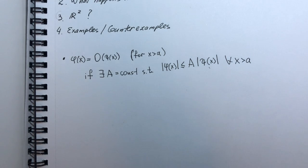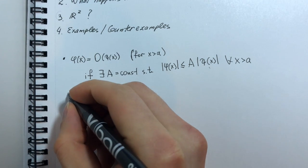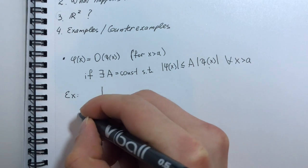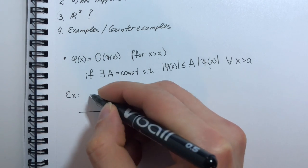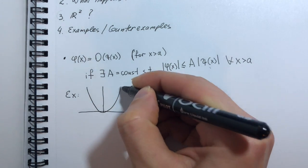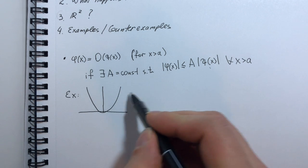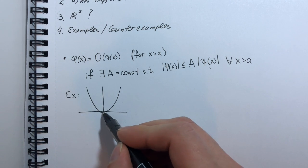So a quick example. If you have a parabola, then you know that eventually it will grow faster than any straight line. So if you have a straight line here,